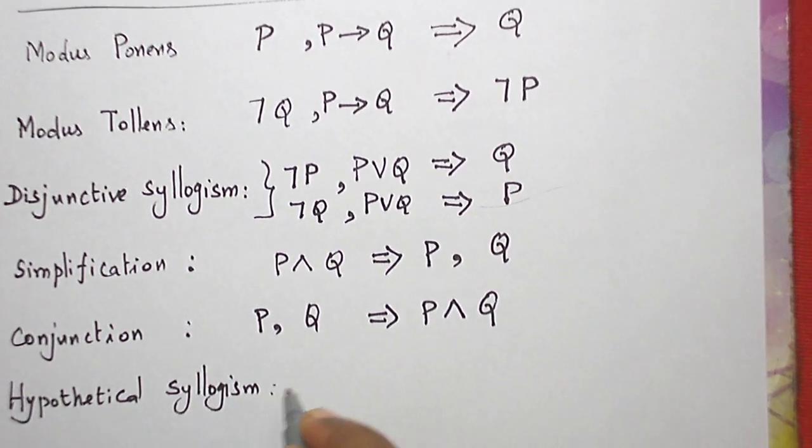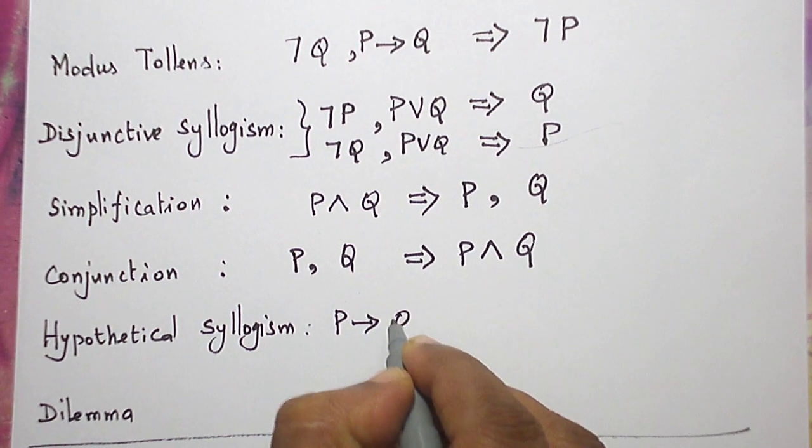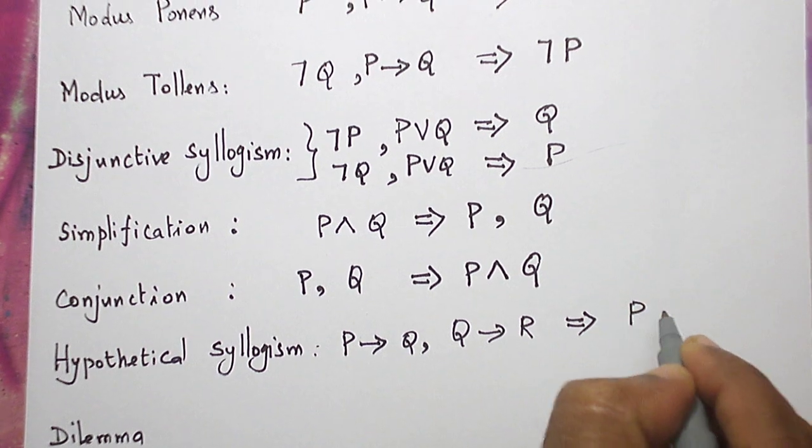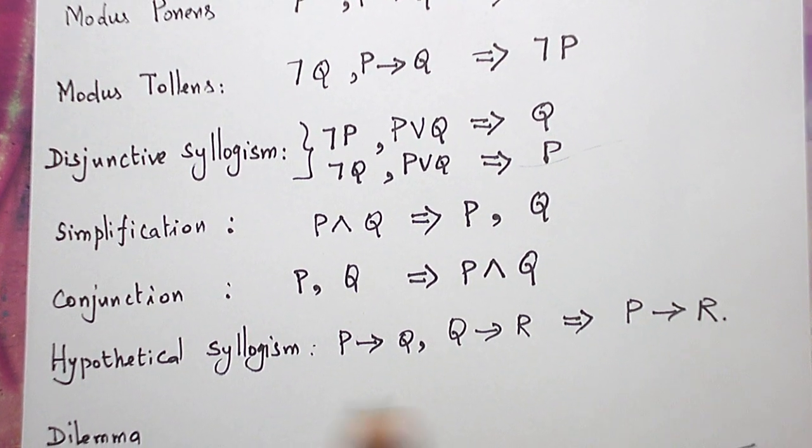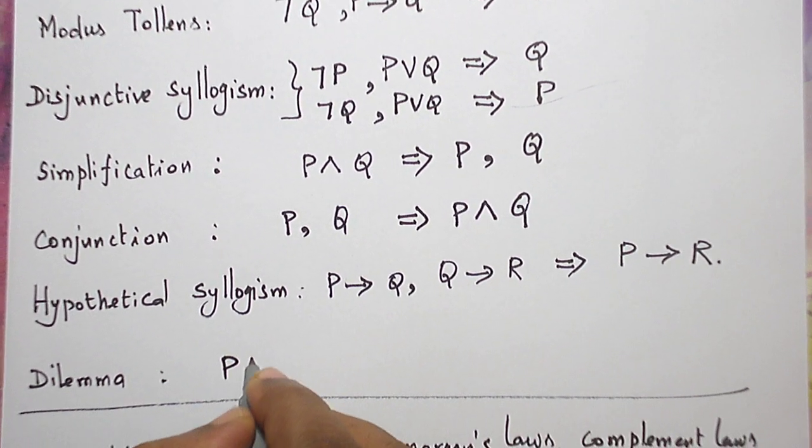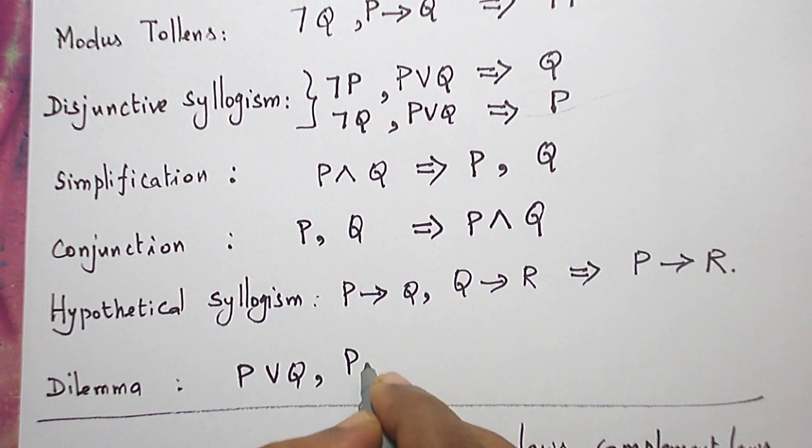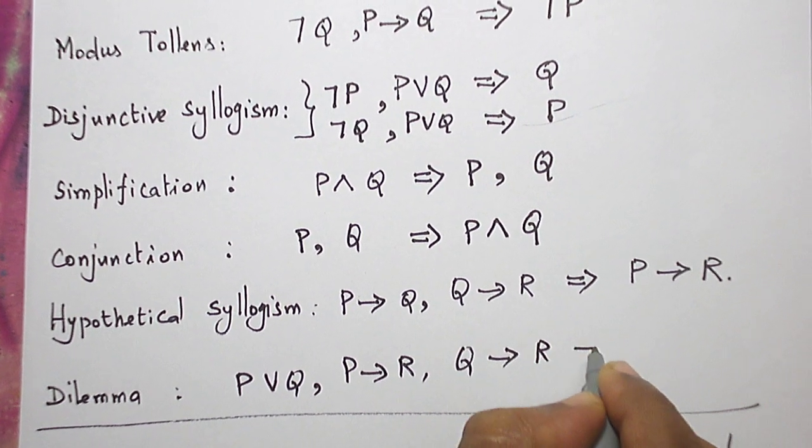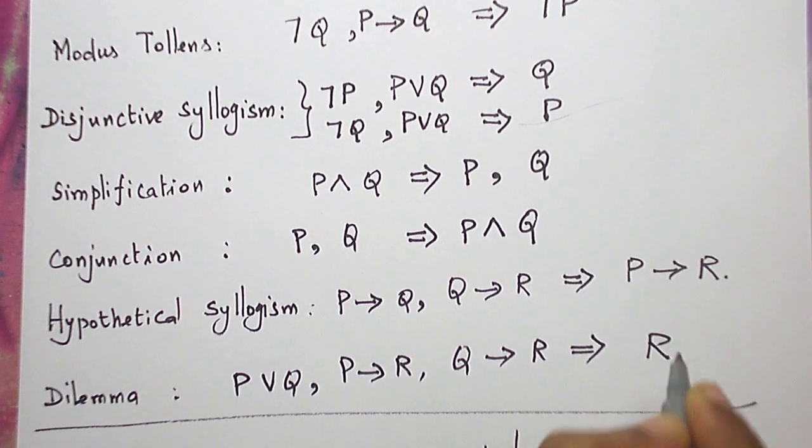Hypothetical syllogism. P conditional Q and Q conditional R. These two together can be combined as P conditional R. Dilemma, P or Q, P conditional R, Q conditional R shall be combined as R. This is dilemma.